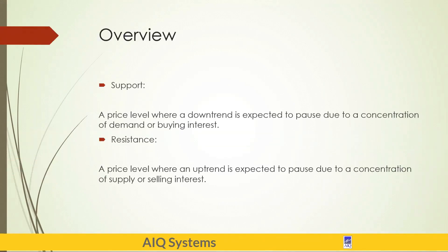The overview: support is the price level where a downtrend is expected to pause, due to a concentration of demand or buying interest - it levels out at a certain level, sometimes moving away from it and coming back to test that level. Resistance is the opposite. You have an uptrend and it pauses with a concentration of supply and selling interest.